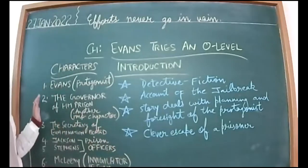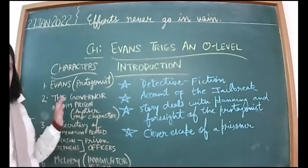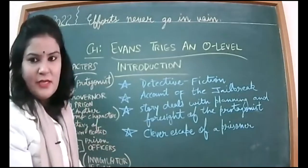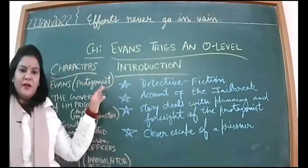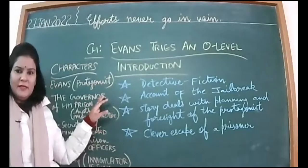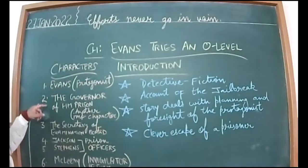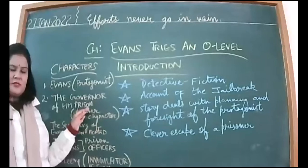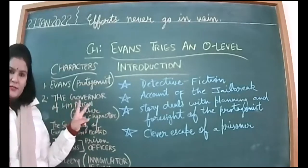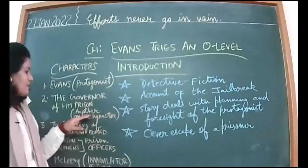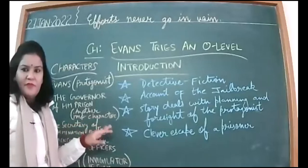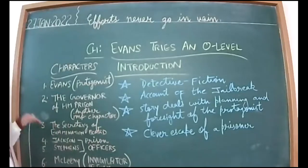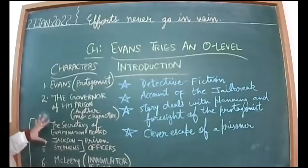The first character is Evans — James Roderick Evans is his full name, but you can call him Evans. He is the protagonist, and you can find his name in the title itself. Then we have the Governor of HM Prison Oxford — he is the main head, managing everything. He is the second important character, equivalent in importance to Evans.